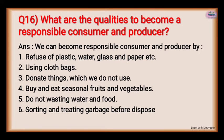What are the qualities to become a responsible consumer and producer? We can become responsible consumers and producers by: refusing use of plastic, water, glass, and paper unnecessarily; using cloth bags; not buying things we do not need; buying and eating seasonal fruits and vegetables; not wasting water and food; sorting and putting garbage before disposal.